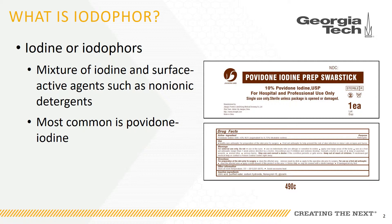Iodine is a very effective microbiocide. The word microbiocide means that it lowers the chance of infection from bacteria and viruses. This product is used in the medical industry and you may have had it used on a cut or wound. It has a characteristic red to brown color in solution and that sometimes leaves a stain. It works by breaking down the cell wall of bacteria and viruses, rendering them ineffective.